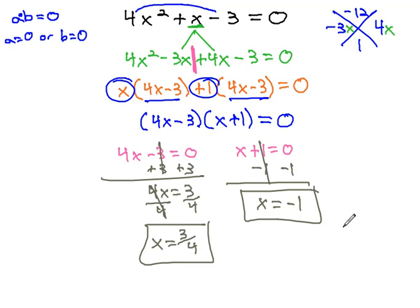X is either 3 fourths, or x could be negative 1. Either one makes this a true equation.